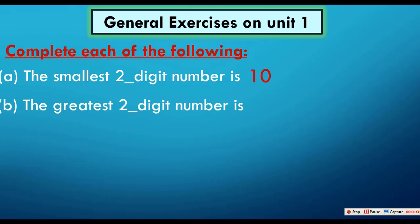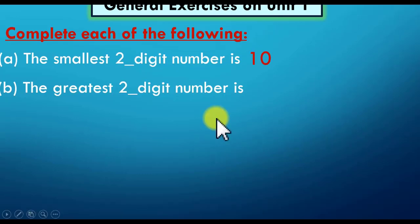The greatest two-digit number is? We confirmed that 'smallest' means الأصغر, and 'greatest' means الأكبر. Who can tell me the greatest two-digit number? Well done — ninety-nine. The greatest two-digit number is ninety-nine.